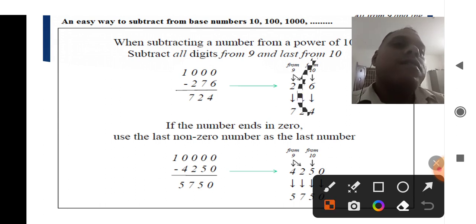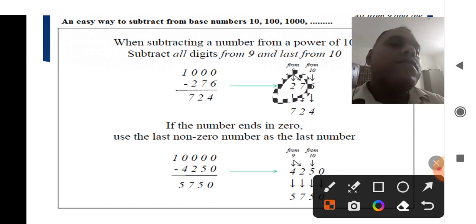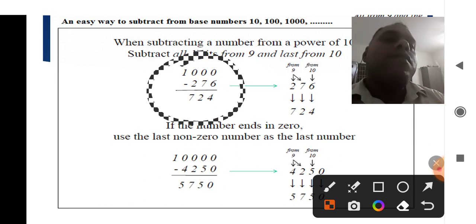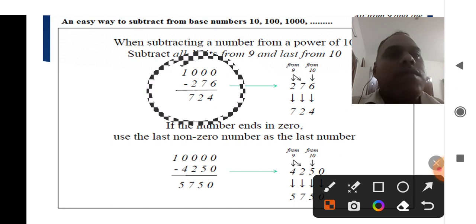The final answer is 724. In the ordinary method for 1000 minus 276, we usually carry numbers and careless mistakes occur. To avoid that, we use Vedic Mathematics.